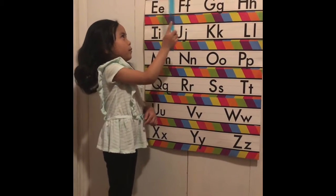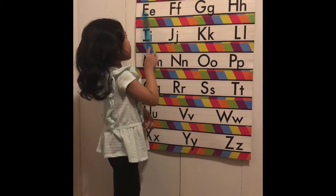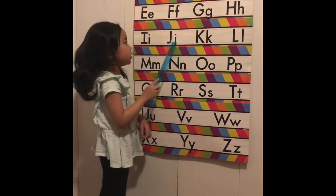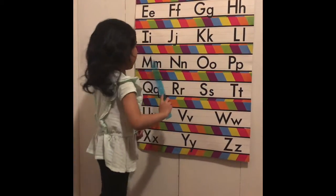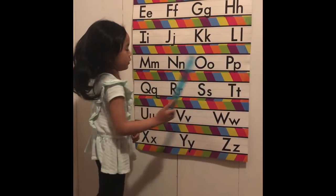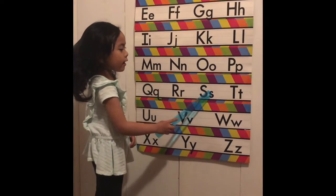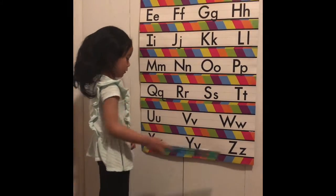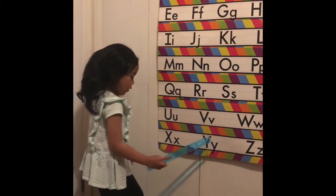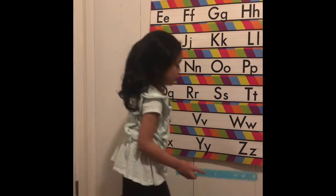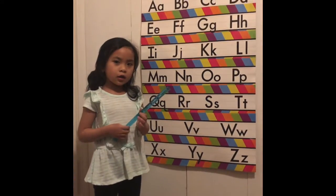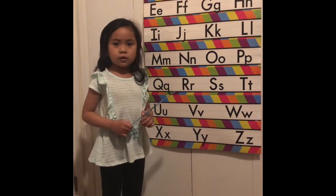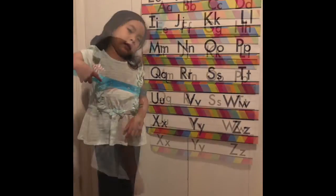A, B, C, D, E, F, G, H, I, J, K, L, M, N, P, Q, R, S, T, U, V, W, X, Y, and Z. Now we learn the alphabet. Next time won't you sing with me.